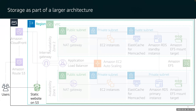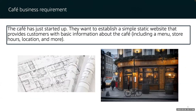The café has just started up and they want to establish a simple static website that provides customers with basic information about the café — like menu, store hours, location, and more. Currently they don't have any marketing strategy and they want to gain new customers. It was suggested that they expand their community awareness by hosting the café website and making it available for customers using Amazon S3.